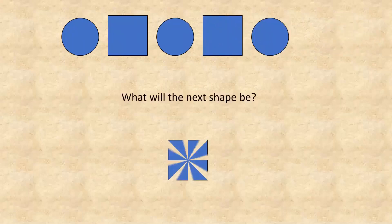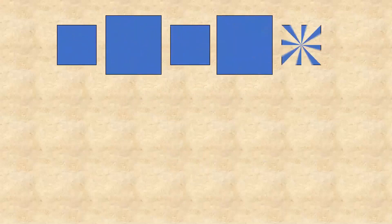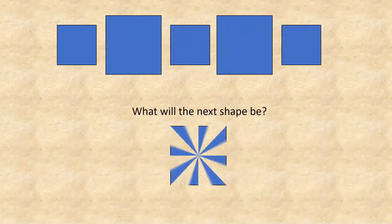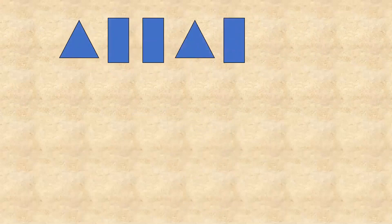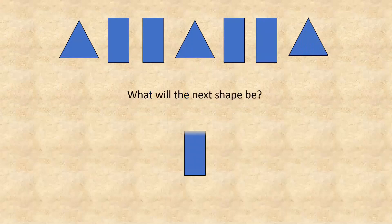Next: circle, square, circle, square — very simple, the next is square. Next: big square, small square, big square — very simple, next is big square. Next: triangle, rectangle, rectangle, triangle, rectangle, rectangle — one triangle then two rectangles — so the next shape is rectangle.